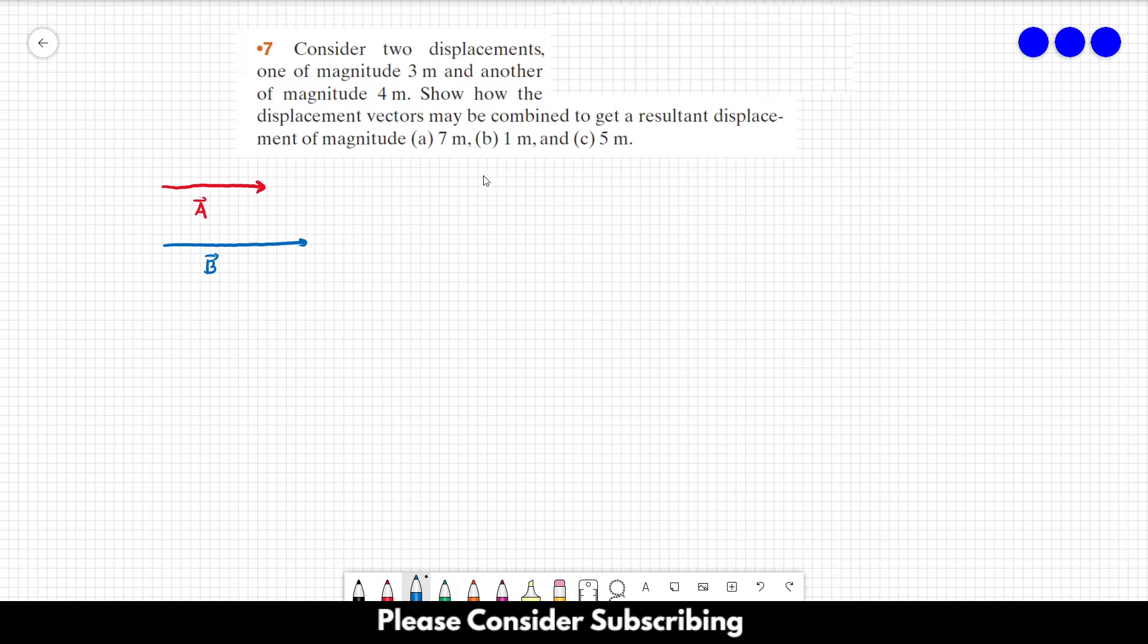In letter A, we want to combine the vectors so we get a 7 meters displacement. So we have 3 meters over here and 4 meters for letter B. It's pretty simple to see, you just align them pointing in the same direction. If you do this, you have 3 meters over here, 4 meters over here, so you would get 7 meters. You just align them parallel to each other.